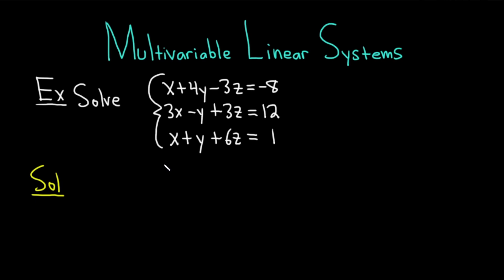Our strategy is going to be the following: we're going to pick two equations and then get rid of a variable, and then we're going to pick another two equations and get rid of the same variable. Then we should be able to finish from there. I'm going to number the equations 1, 2, and 3.